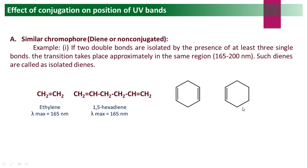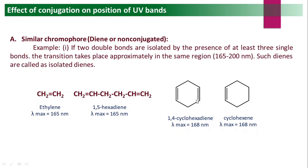Similarly, cyclohexadiene with two isolated double bonds and cyclohexene with one double bond both absorb at the same wavelength of 165 nm. Even with three or four isolated double bonds, the lambda max remains around 165–200 nm because the chromophore is still just an individual double bond; only the absorption intensity (epsilon) may increase.